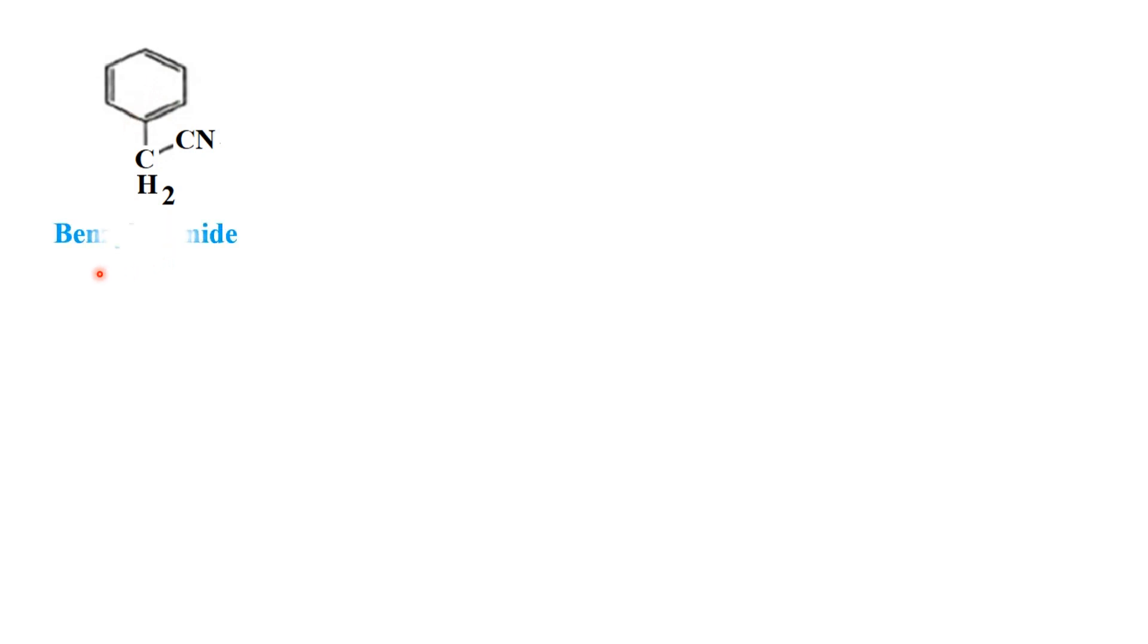That is why it is called as benzyl cyanide and that one is treated with dibromopentane because this is the first carbon, this is the fifth carbon. This is the pentyl group and first and fifth would be connected with the two bromides. That is why it is called as 1,5-dibromopentane. What are the two reagents taken? One is benzyl cyanide, another one is 1,5-dibromopentane.